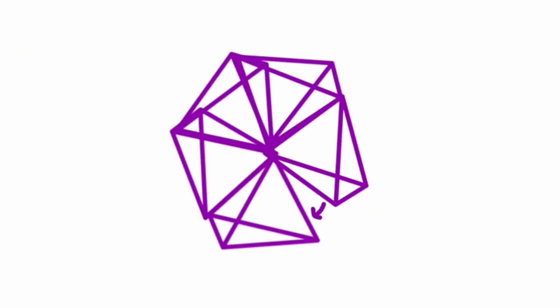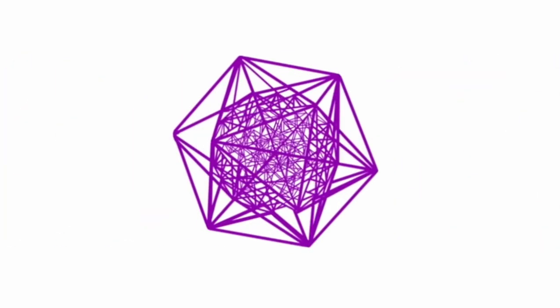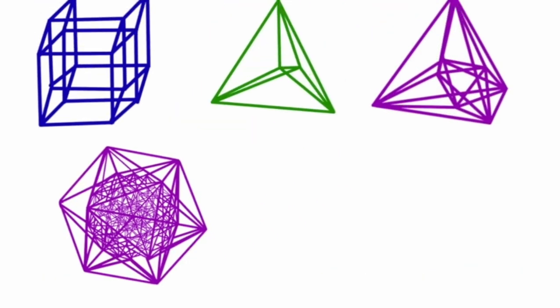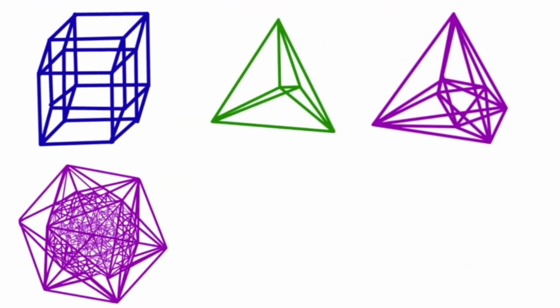Five tetrahedra around a shared edge can create the hyper-icosahedron. This regular polytope is made of 600 tetrahedral faces. We're done using the tetrahedron now.